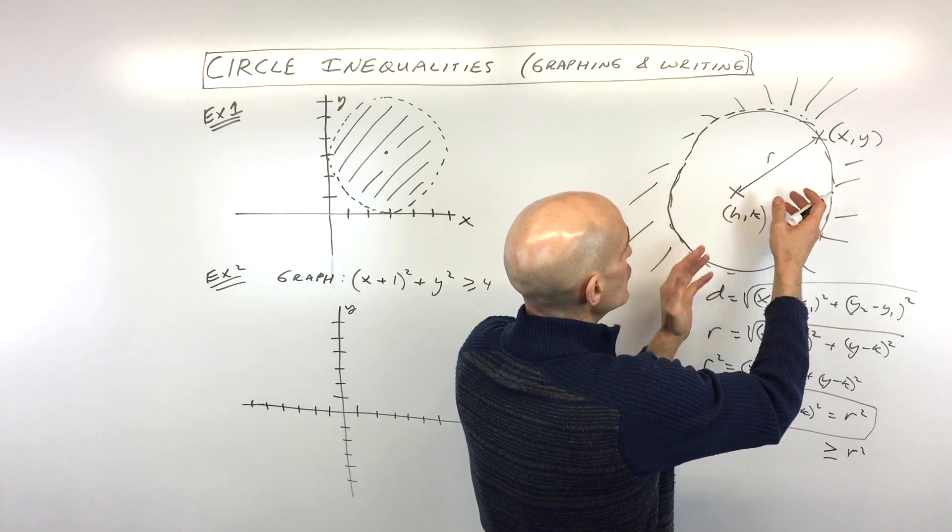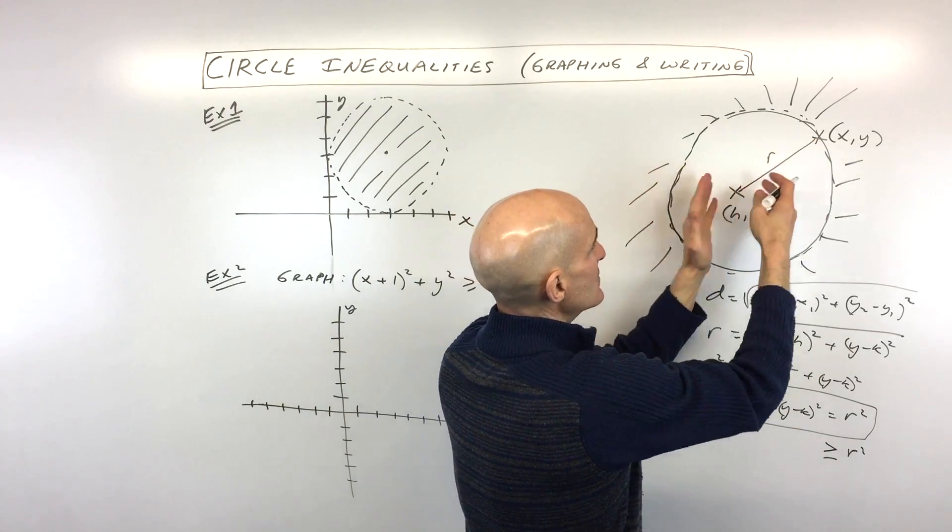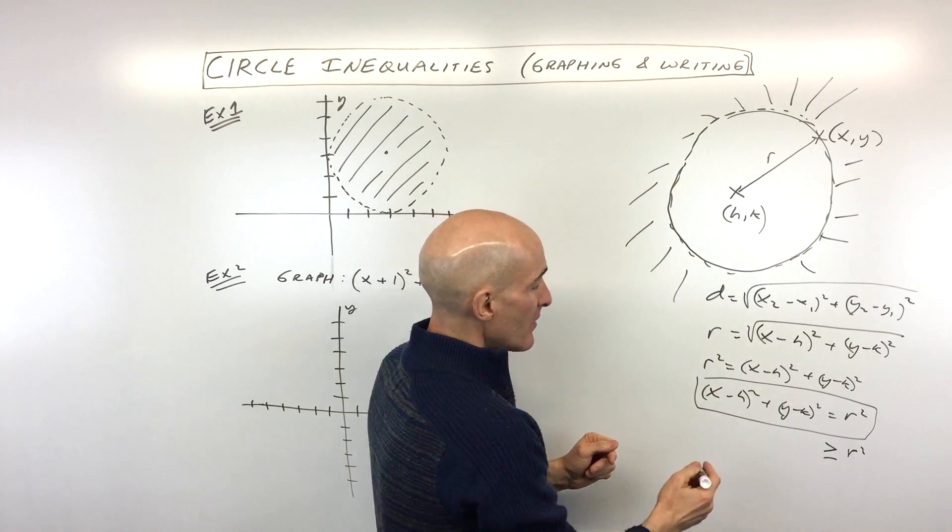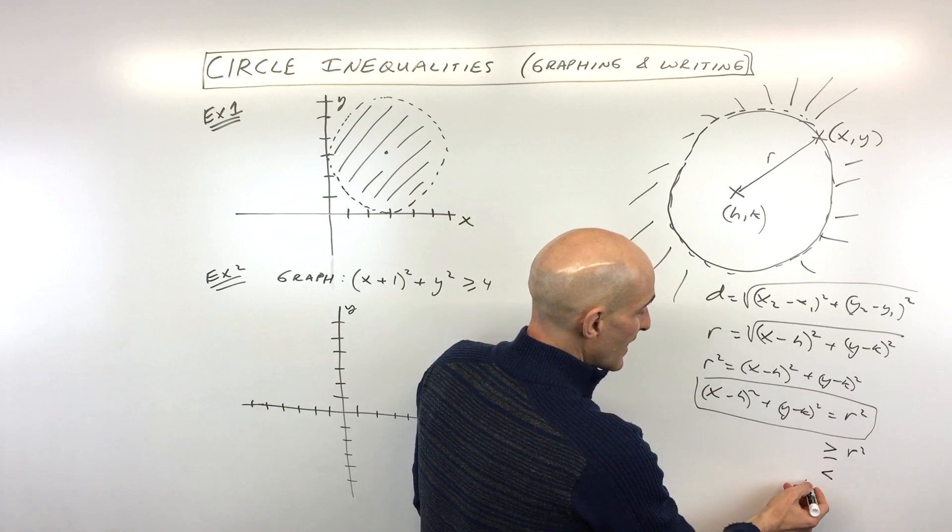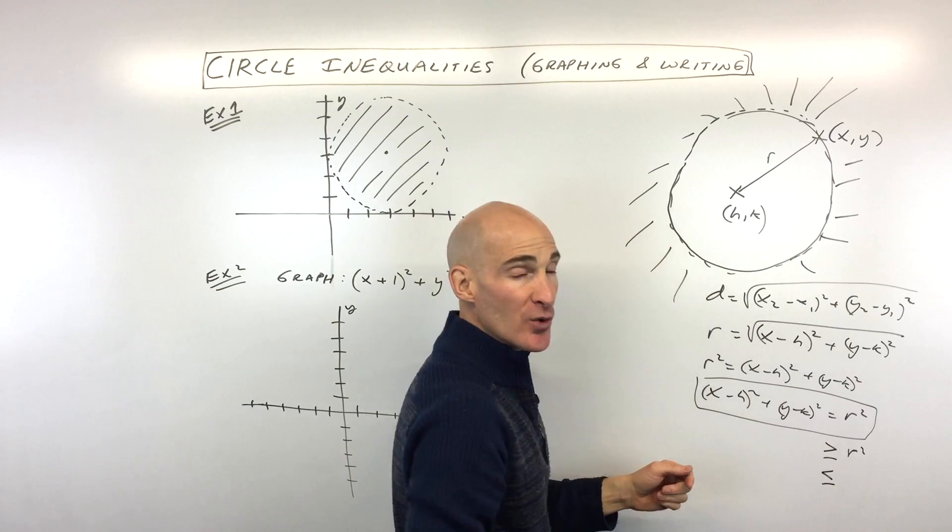Say I want all the points that are closer, or on the inside of the circle, meaning closer to the center, we want that distance to be less than the radius. Then what we would do is we would do less than, or if you want to include the points that are on the circle as well, less than or equal to.